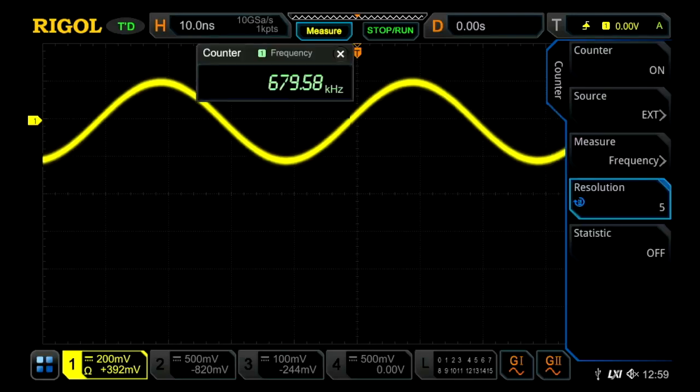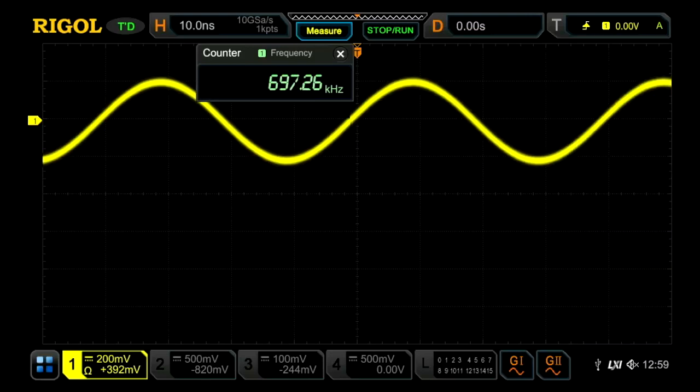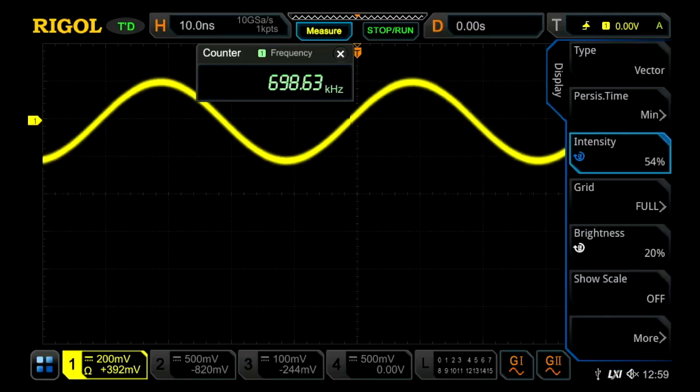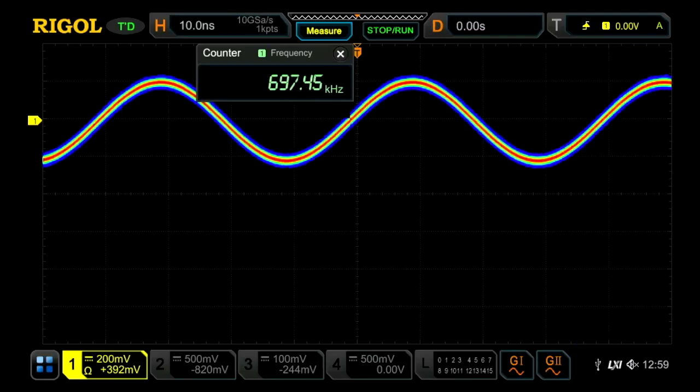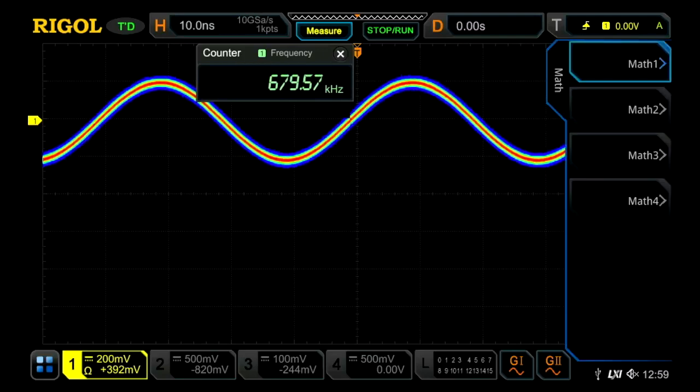So we're going to turn on the counter and that's showing your waveform capture rate at about 680,000 samples per second. Now the great thing about the 7000 is how many other things we can turn on and still accomplish a super high sample rate.